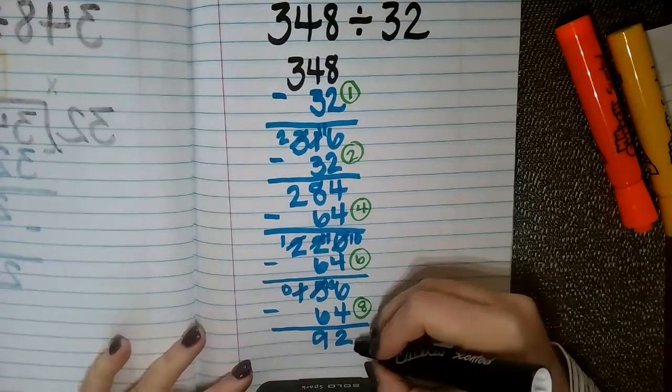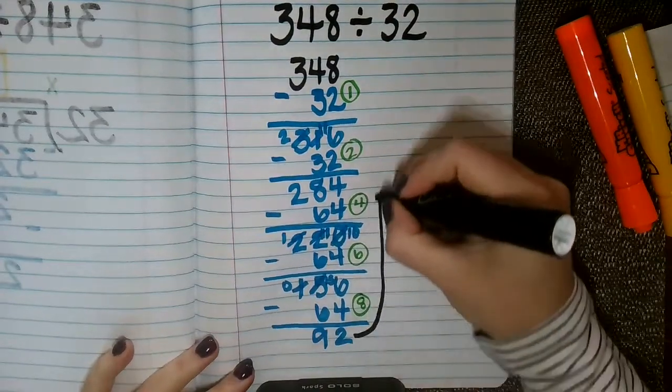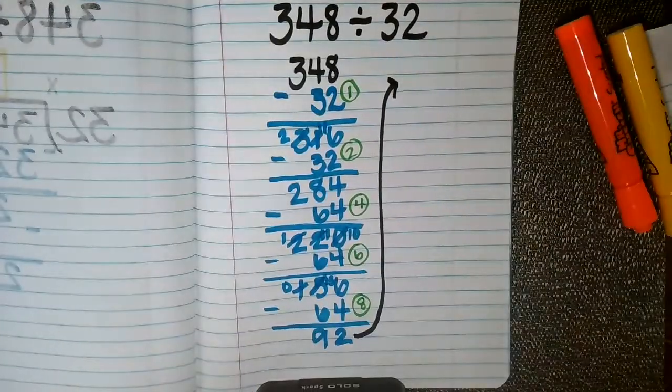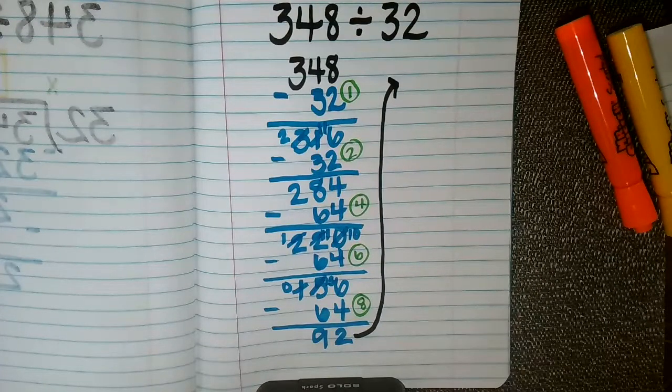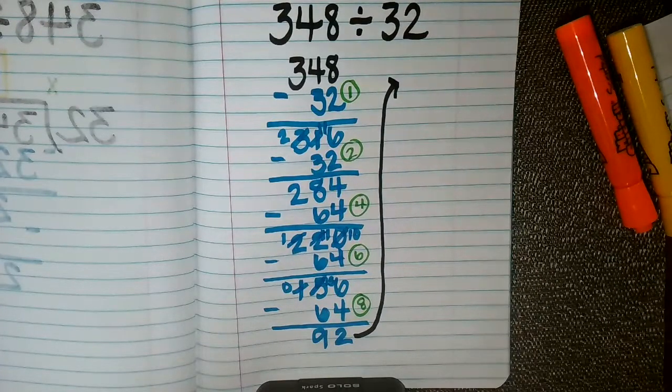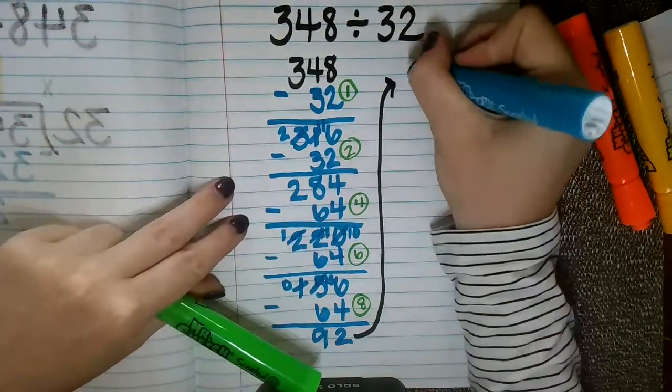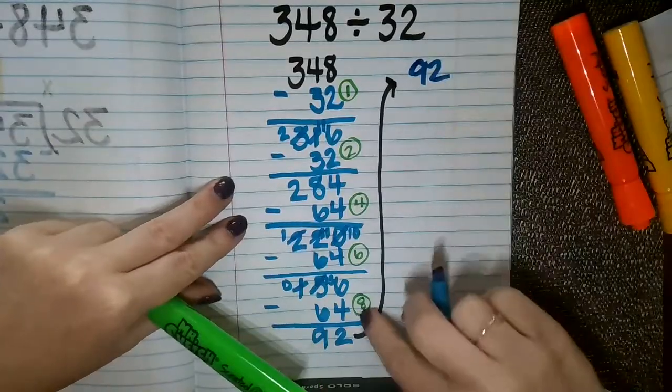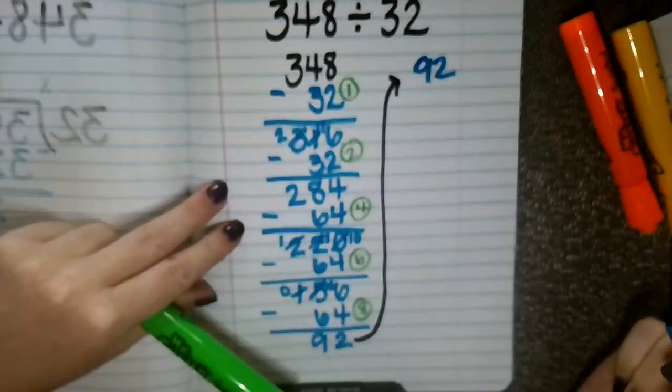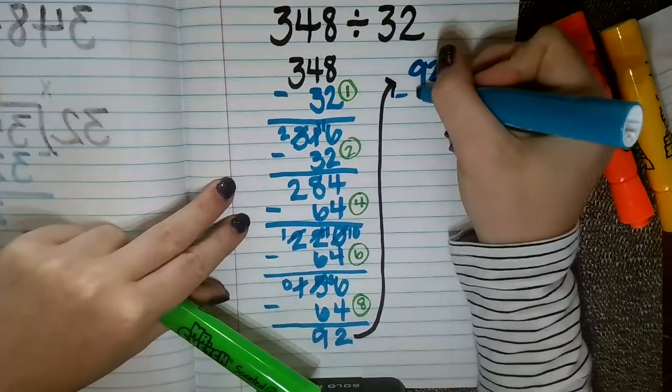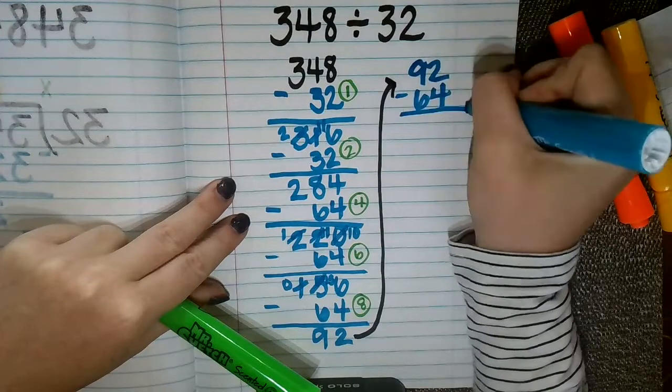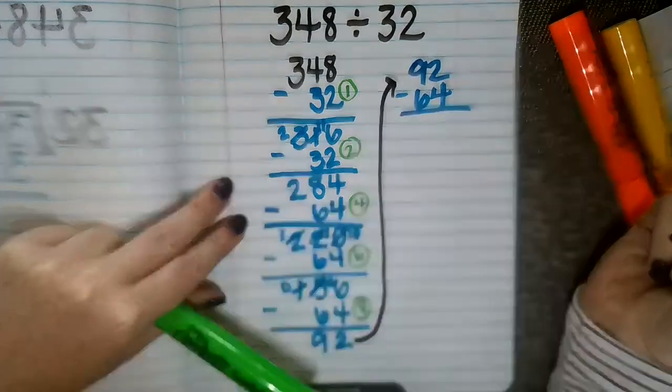I'm kind of running out of paper here. You can see this is a longer strategy. This one is going to be more time-consuming, take a little longer, but it definitely still works. Okay, so I'm going to rewrite my 92 up here. I've still only taken 8 groups of 32 away. I'm going to take another two groups of 32 because I know 92 is larger than those two groups of 32.